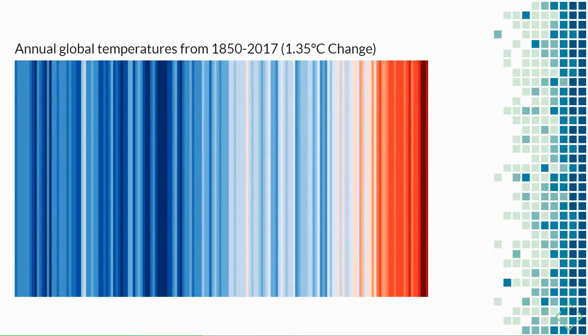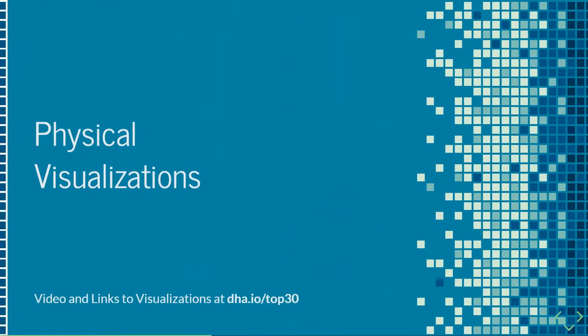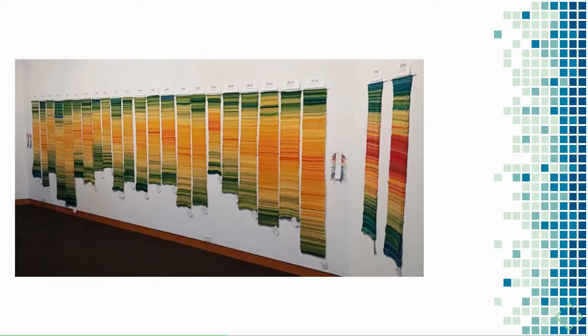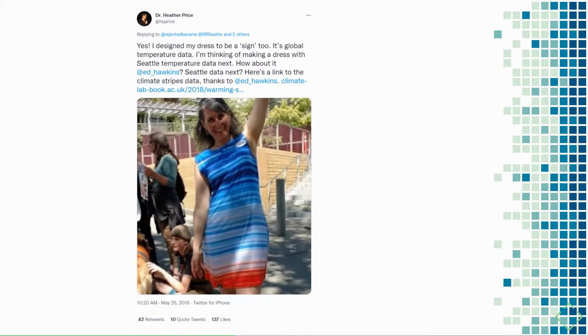A bit of a bonus — it lines up really nicely with the next category: Ed Hawkins' warming stripes. When it first came out a few years ago I saw it used everywhere. This version shows the global annual temperature change, with a 1.35 degrees Celsius change for Canada — this example is for Toronto. It's really simple and gets a point across. What I found even more impressive, leading us to the next category of physical visualizations, is what people did with those graphics. Emily McNeil turned them into tapestries, and the one I was most impressed by is Dr. Heather Price turning it into a functional dress that is both beautiful and informative.